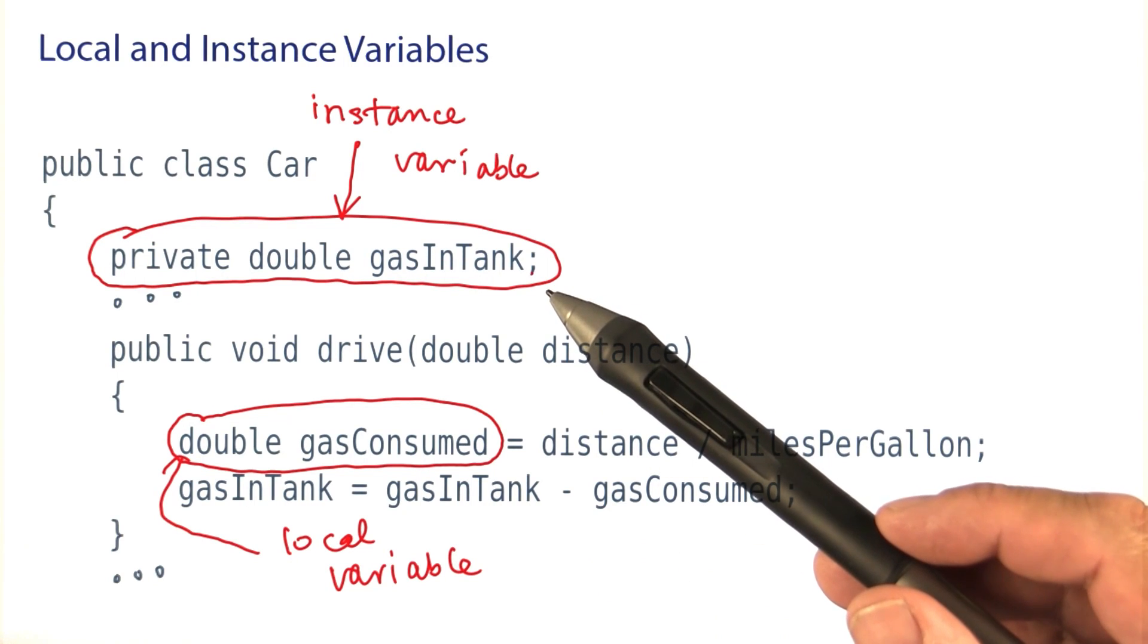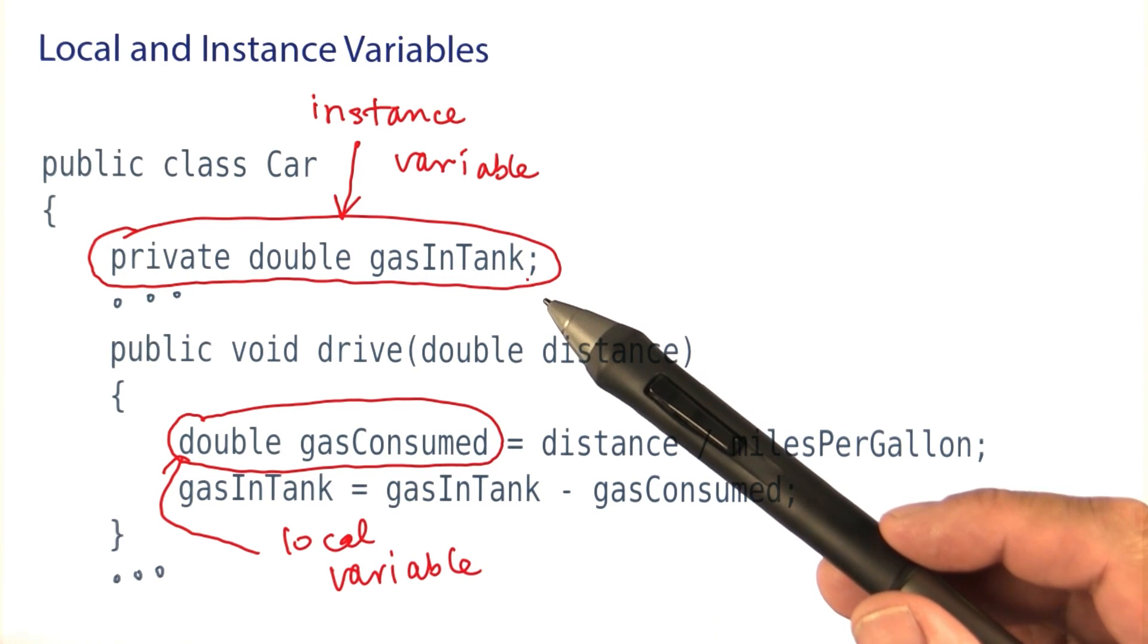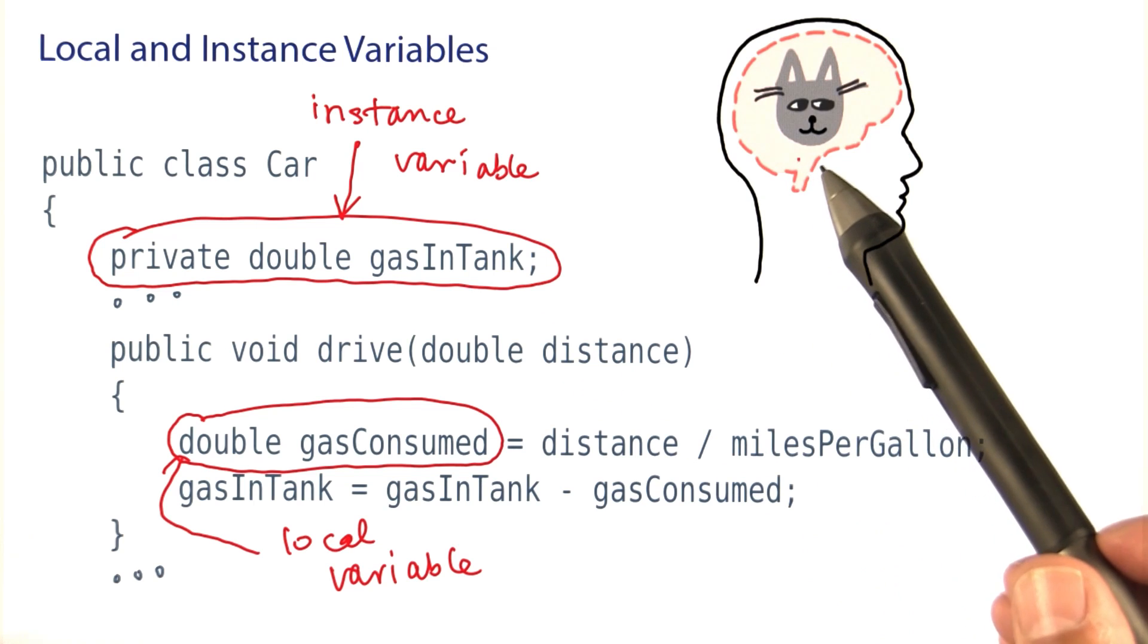The instance variable forms the long-term memory of an object. The kind of thing that an object wants to remember for a very long time.